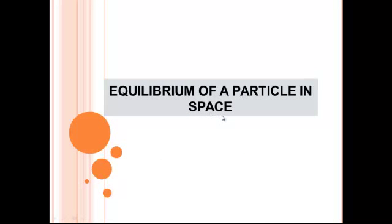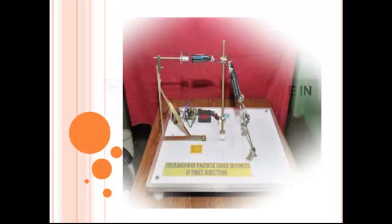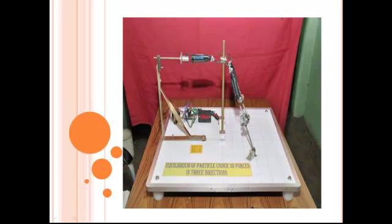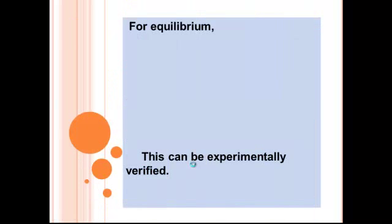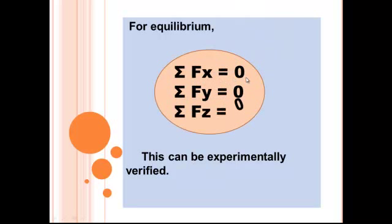Equilibrium of a Particle in Space. Provision is made to measure compressive force on the pole and rope tensions. For equilibrium, summation Fx equal to 0, summation Fy equal to 0 and summation Fz equal to 0. This can be experimentally verified.